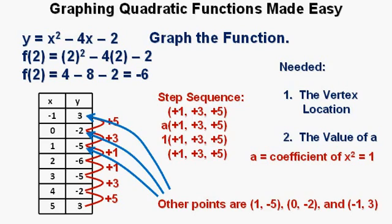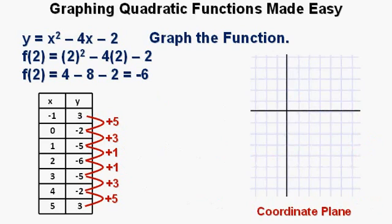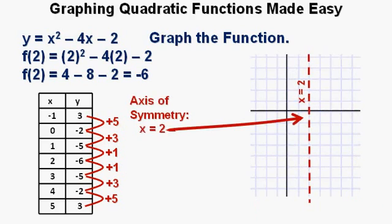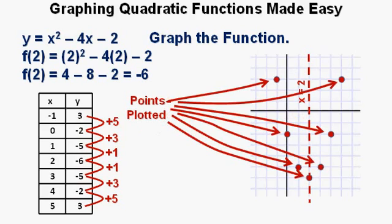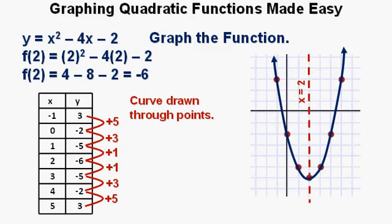Now we're ready to plot the points. Here's our coordinate plane. First, here's our axis of symmetry at x equals 2. Here are all the points plotted. And here's the curve of the function drawn through the points. We label this function y equals x squared minus 4x minus 2.